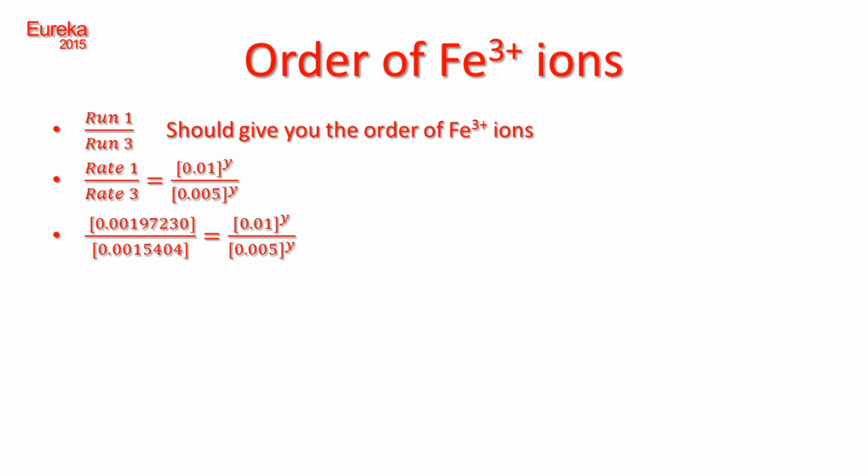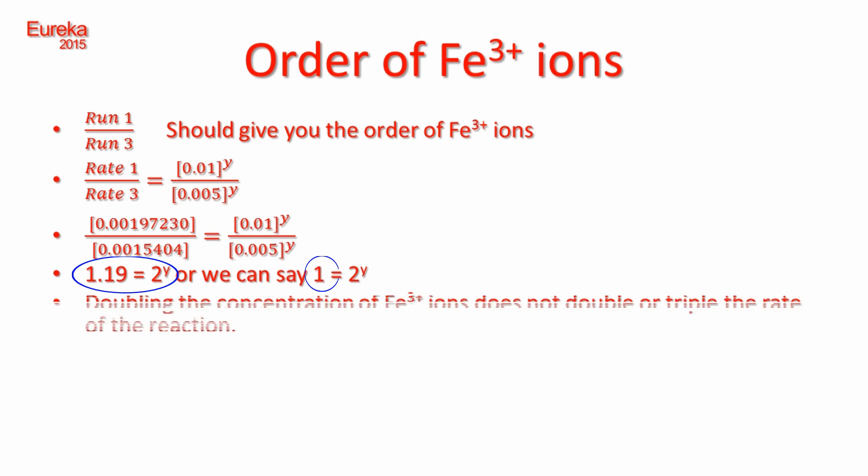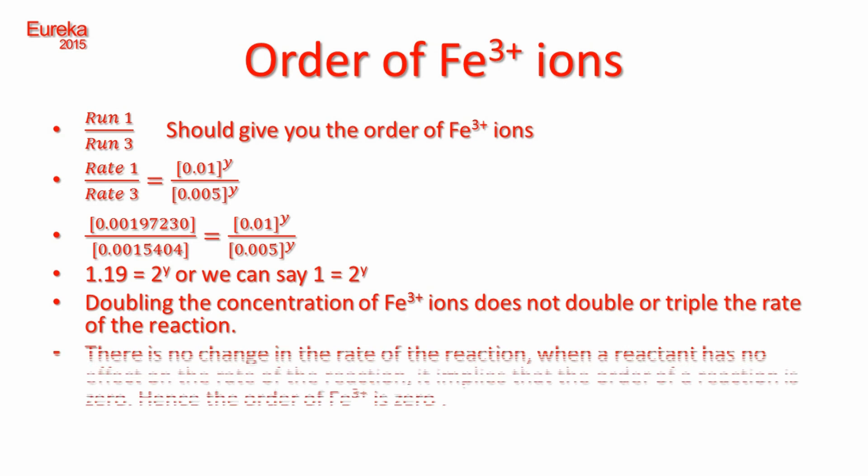If there is a change in rate, it indicates that this reactant has an effect on the rate of the reaction. But as evidenced from the data, the ratio of the rates is equal to 1.19, or we can round it to the next whole number which is 1. Which implies that a change in concentration of Fe3 plus ions has no effect on the rate of this reaction.